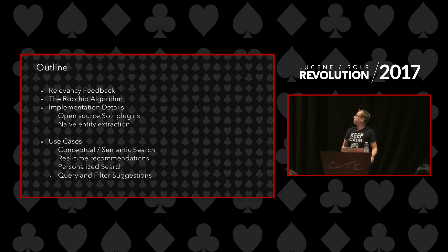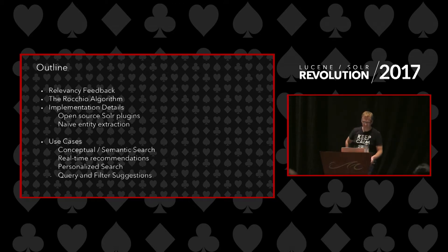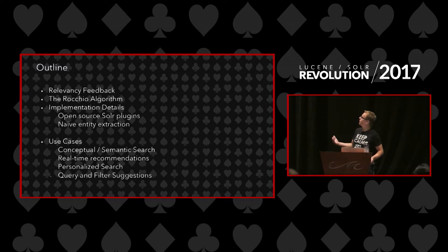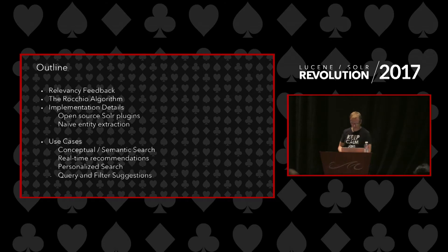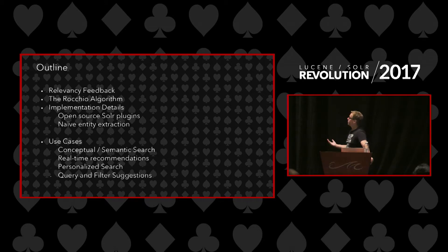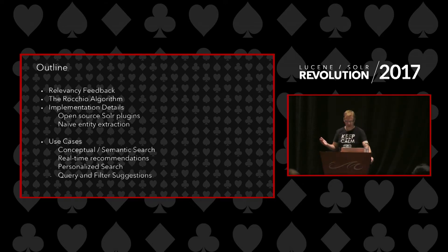A brief outline of my talk: I will be talking about relevancy feedback and the Rocchio algorithm, going over implementation details — how we've built this as a request handler in Solr, how we do entity extraction. I will also talk about conceptual or semantic search, how we achieve this with this plugin, how we do real-time recommendations on the site, how we can extend it to do personalized search, and also some use cases such as query and filter suggestions.